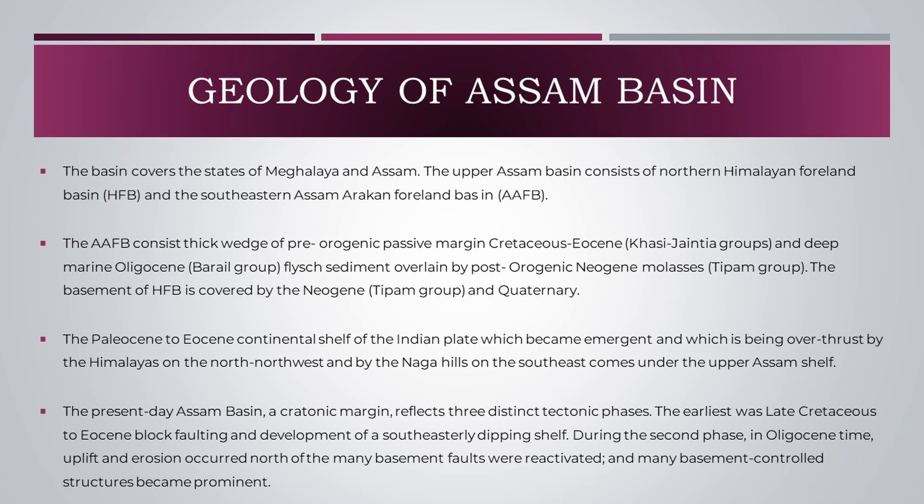The Upper Assam Basin consists of the Northern Himalayan Foreland Basin and the Southeastern Assam-Arakan Foreland Basin. The AAFB consists of a thick wedge of Pre-Orogenic Passive Margin, Cretaceous-Eocene Khasi-Jaintia groups, and Deep Marine Oligocene Barail group Flysch sediment, overlain by Post-Orogenic Neogene Molasse Tipam group. The basement of the HFB is covered by the Neogene Tipam group and Quaternary.